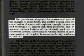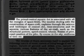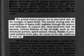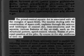It reads: 'The primal central square dot is associated with all the energies of space fields. The treaties dealing with the construction of spacecraft explain through science and technique of central dot, time measures, and 64 squares. Various features of the aircraft, such as the structural pattern, speed control, wheels, fitness of pilot, exact position of pilot, fly course in the sky, swiftness of time, etc.'